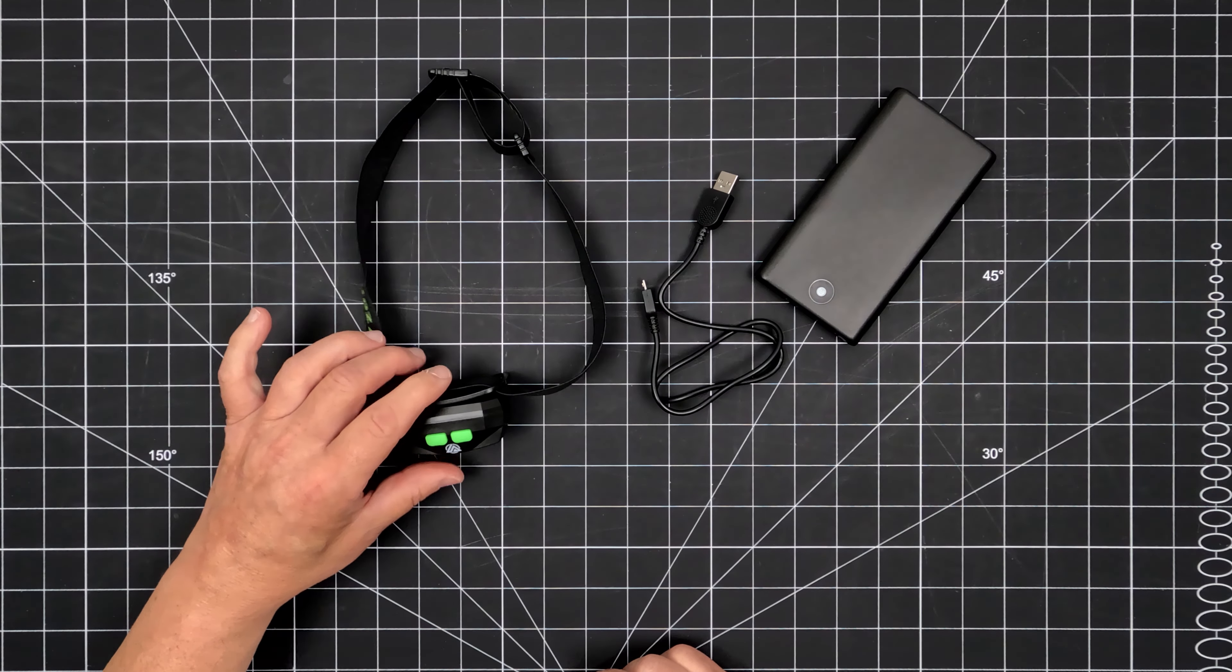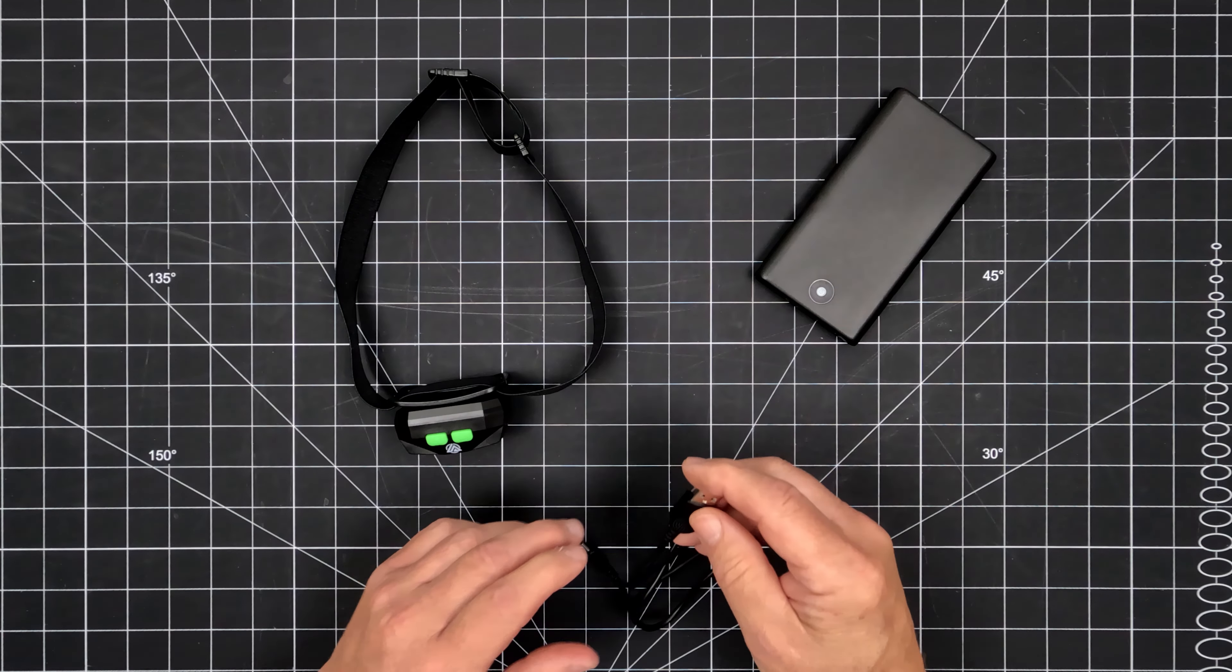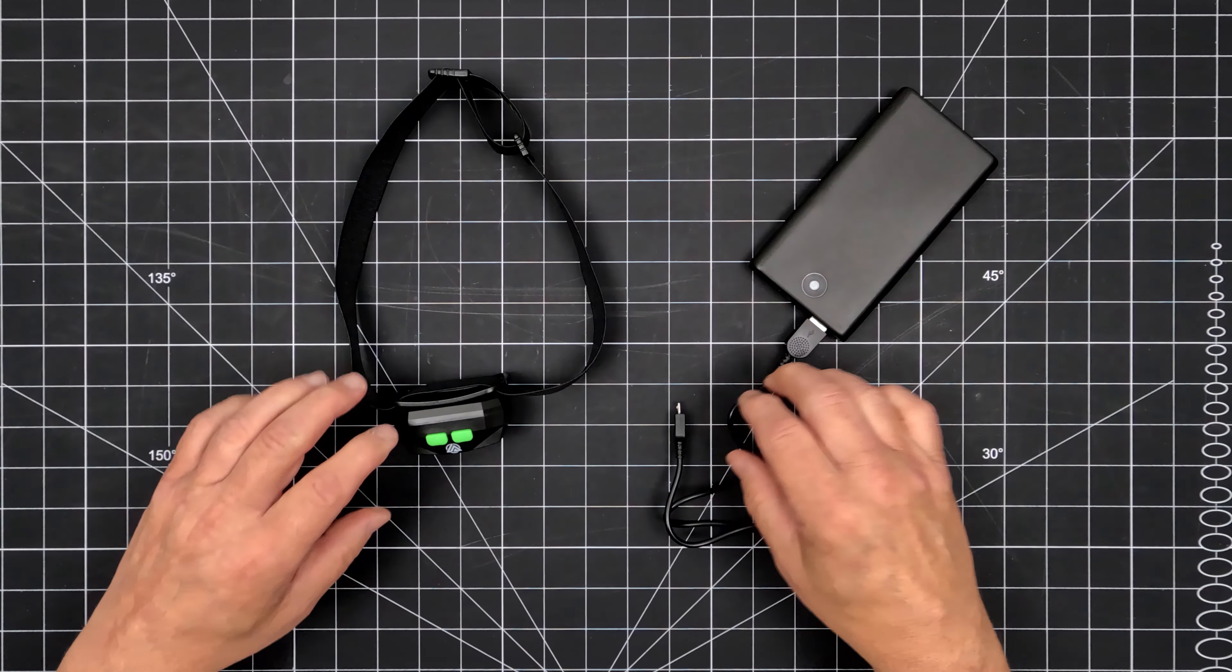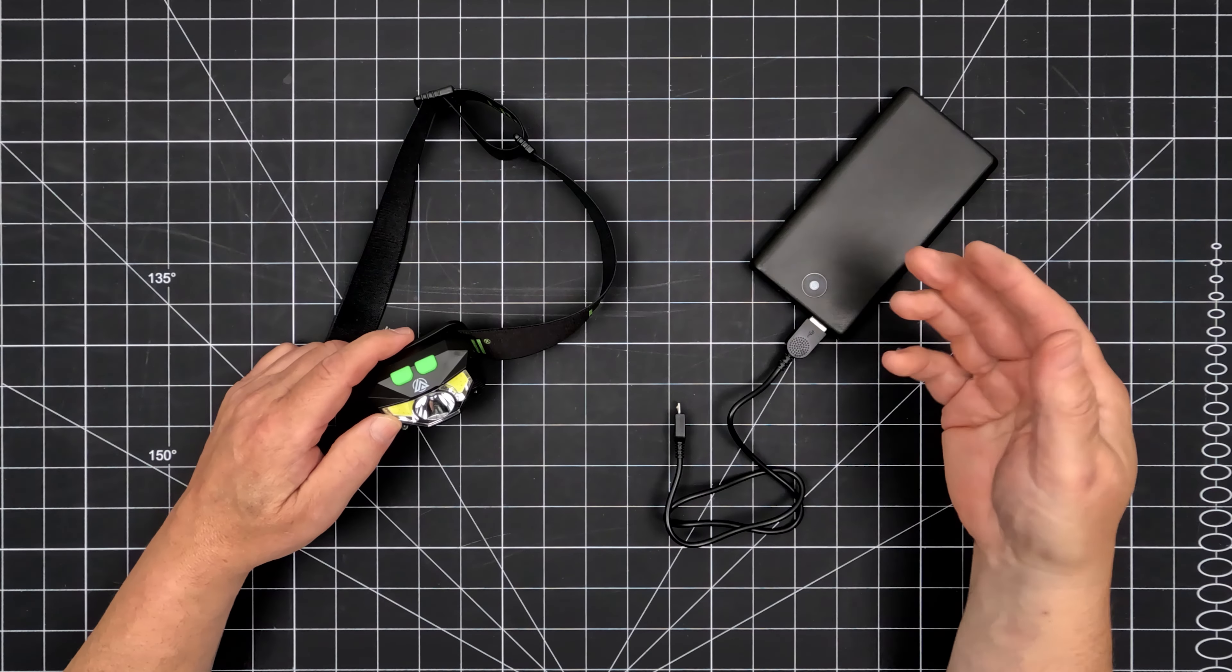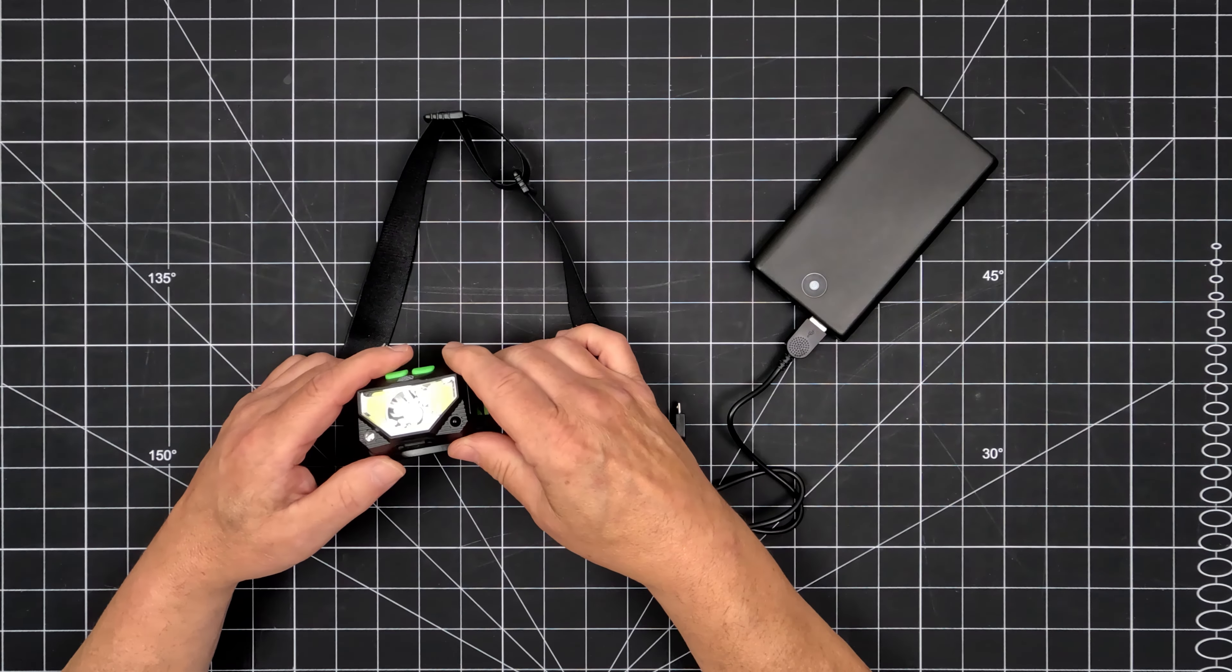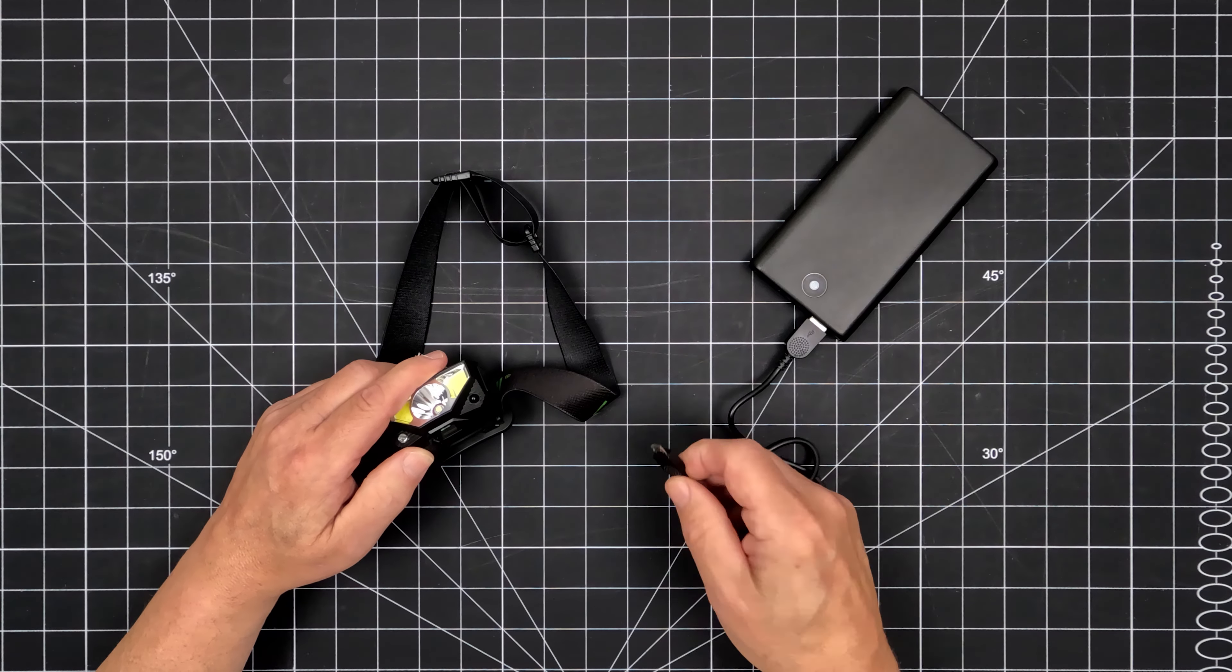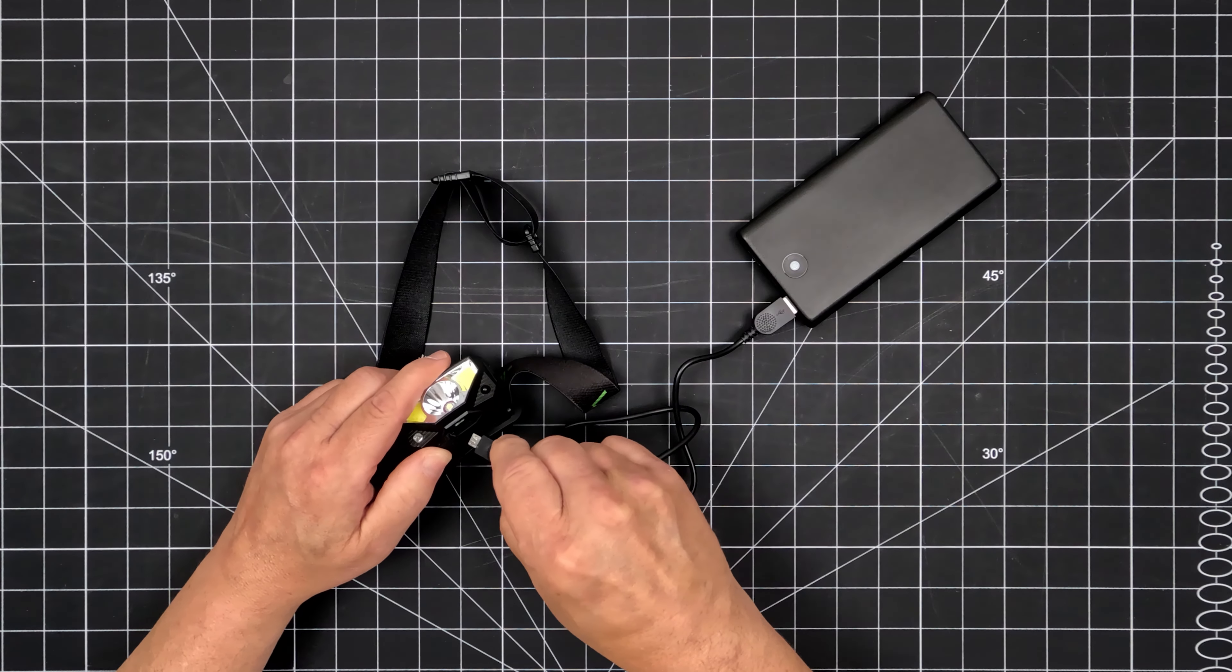Since the Swipe is rechargeable, it's best to charge it fully before first use. Plug the charging cable into any USB power source, such as a power bank, computer, or wall charger. Pull back the rubber port cover on the bottom of the headlamp and insert the micro USB plug.